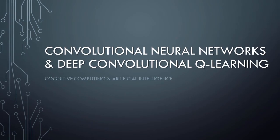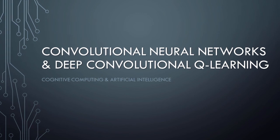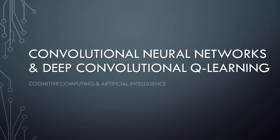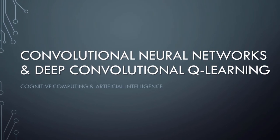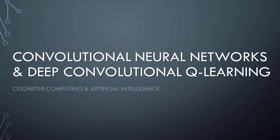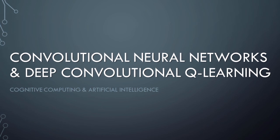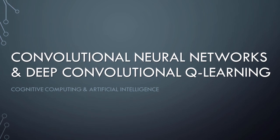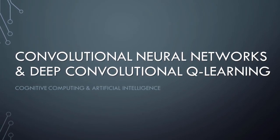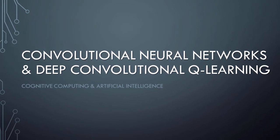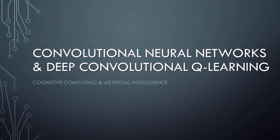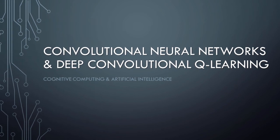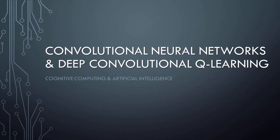Now that we have a good understanding of how convolutional neural networks work and how they can be used in conjunction with deep Q-Learning, we're ready to begin building AI agents that rely on these technologies. In the next video in this series, we'll implement an AI agent that uses a convolutional network and deep Q-Learning to learn to play a classic video game, getting lots of practical hands-on experience in Python. I hope you will join me as we continue our adventures in cognitive computing and artificial intelligence. Thus ends our lesson on convolutional neural networks and deep convolutional Q-Learning — have a great day.